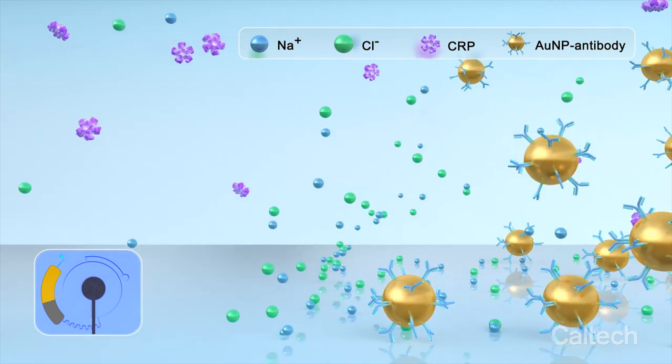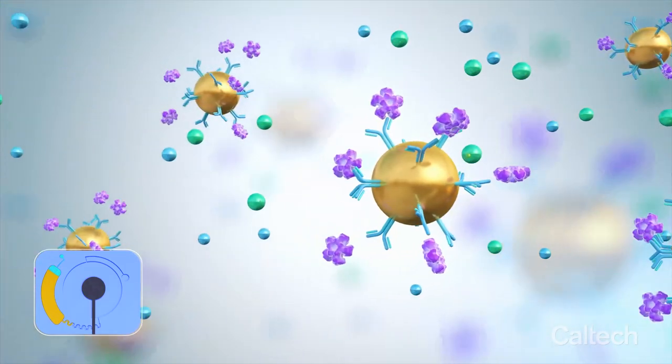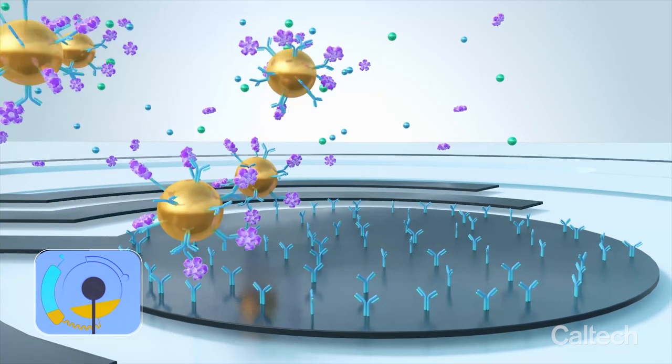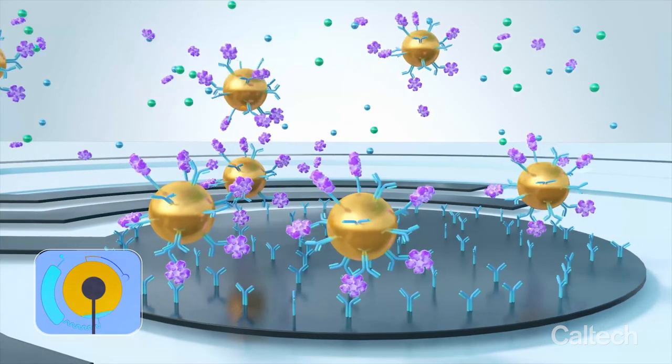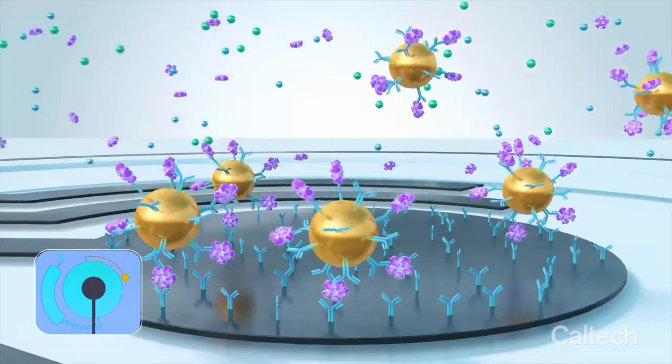The sensor uses gold nanospheres with CRP antibodies. When CRP binds to these gold nanoparticles, it triggers an electrical current that can be continuously logged.